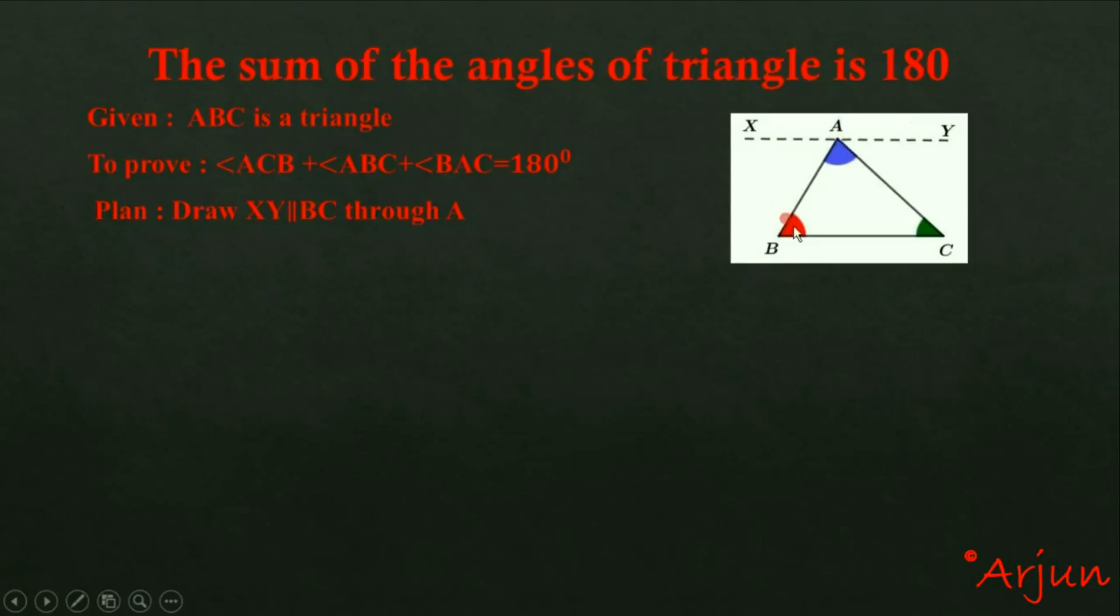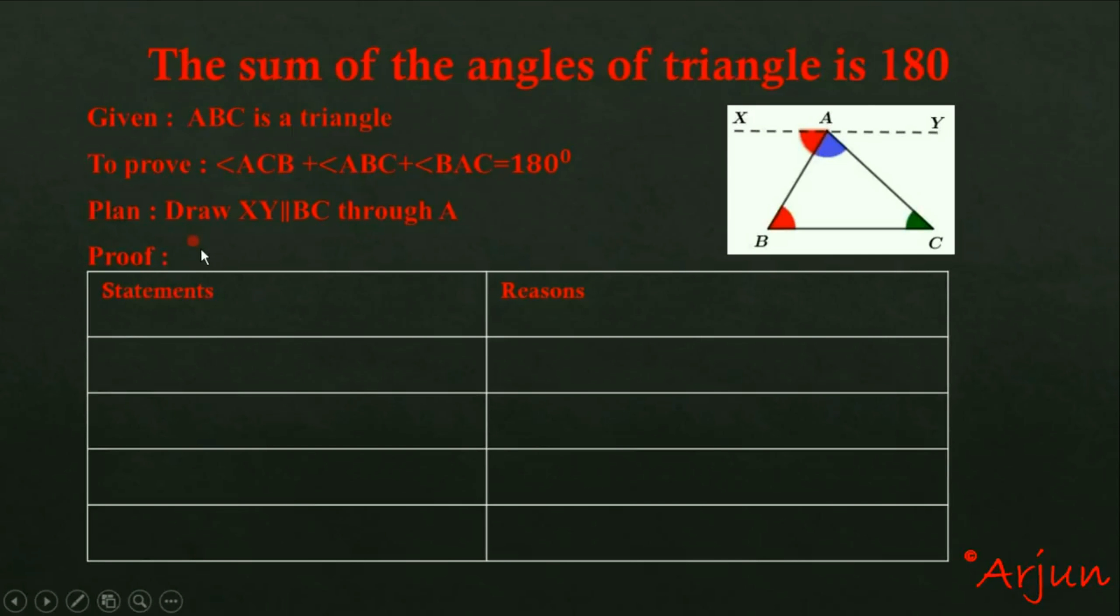Now for the proof, we'll create a statement-reason table. In statement number one: angle BAX is equal to angle ABC. This red angle BAX is equal to this red angle ABC.